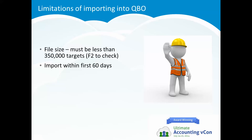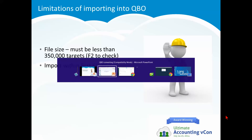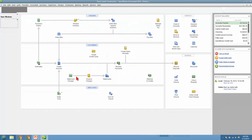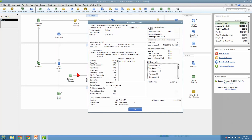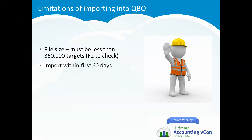Let's talk about some considerations before you convert. First of all, there are some limitations on importing into QuickBooks Online. Your file size needs to be less than 350,000 targets. You can hit the F2 key to check that — it will pull up the product information window where you can see your total targets. That number needs to be less than 350,000, so make sure you check that out.